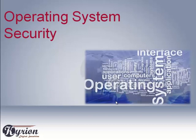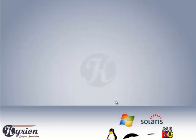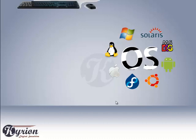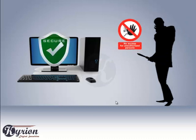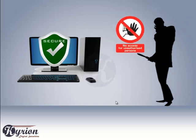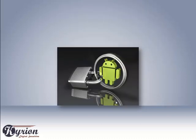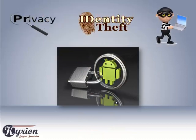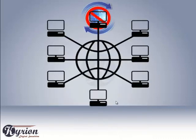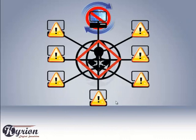Operating system security: the operating system is the important program that runs on the computer, responsible for securing the system by not allowing unauthorized users to access it. Securing your OS is essential for protecting your privacy, reducing the risk of identity theft, and preventing hackers from taking over your computer. Not updating one system in the network may affect the security of other systems, so we recommend you update your OS regularly.